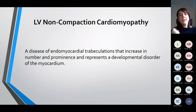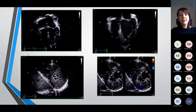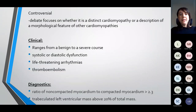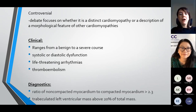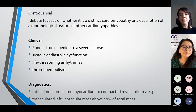Finally, left ventricular non-compaction cardiomyopathy. This is a disease of endomyocardial trabeculations that increase in number and prominence, representing a developmental disorder of the myocardium. In these echo images of one of our patients you can see this very trabeculated left ventricle, and most clearly on short axis you can see the ratio of the trabeculated segments to the normal myocardium. LV non-compaction can be slightly controversial — there is debate as to whether it is a distinct cardiomyopathy or actually a description of a morphological feature of other cardiomyopathies. Clinically it ranges from benign prominent LV trabeculations to a more severe course with systolic or diastolic dysfunction, life-threatening arrhythmias, or thromboembolic events. The current diagnostic criteria on cardiac MRI are a ratio of non-compacted to compacted myocardium of greater than 2.3 and a trabeculated left ventricular mass of over 20% of the total mass.